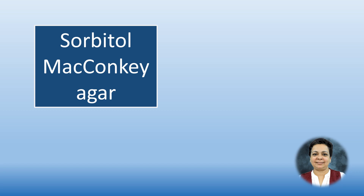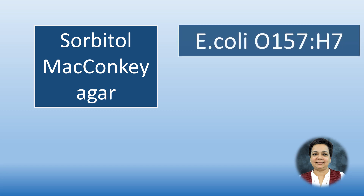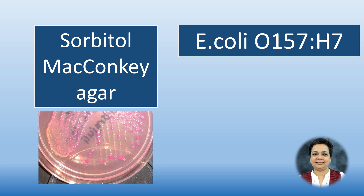Sorbitol MacConkey agar, or SMAC — whenever you hear SMAC, think of E. coli O157:H7 identification, because this is the only serotype of E. coli that does not ferment sorbitol. Sorbitol replaces lactose in this medium, and O157:H7 will produce pale colonies on SMAC, while all other E. coli will produce bright pink colonies.